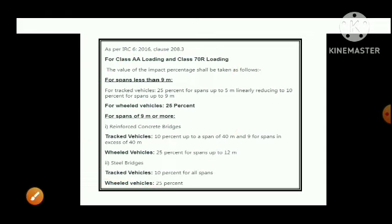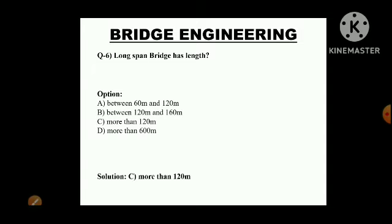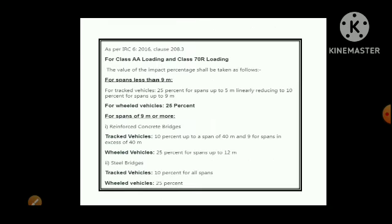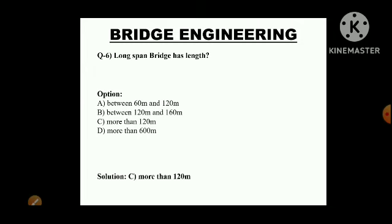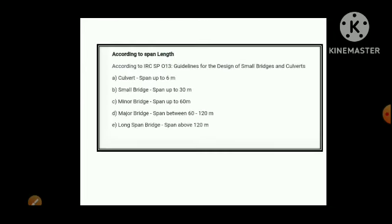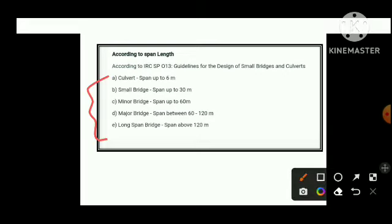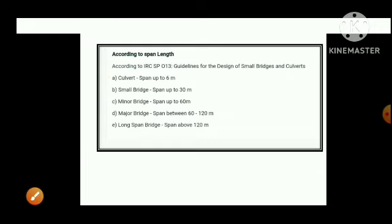Long span bridge has a length of more than 120 meters. As per IRC SP 013 guidelines for the design of small bridges and culverts: culverts have span up to 6 meters, small bridge up to 30 meters, minor bridge up to 60 meters, major bridge span between 60 to 180 meters, and for long span bridge it is above 120 meters. Questions from this classification may come in upcoming GPSC exams.